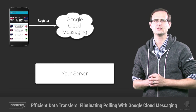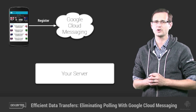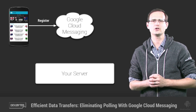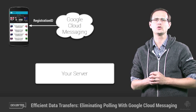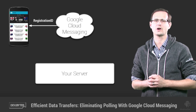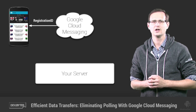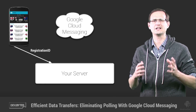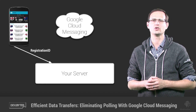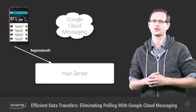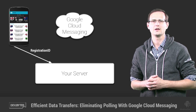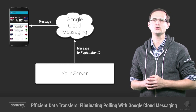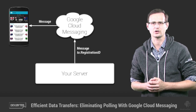It starts with your app on each device registering itself by sending a registration message to the GCM infrastructure. In return, it will be sent a registration ID, which uniquely identifies that instance of your app running on that particular device. Your app should then send this identifier to your server, typically along with a separate identifier that you can use to identify a particular user or installation. Your server now has a way to send messages to a specific app or a specific user via the Google Cloud Messaging infrastructure.